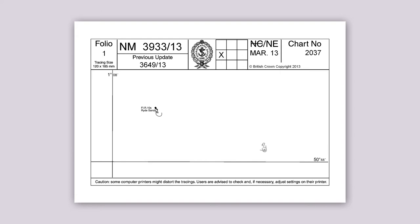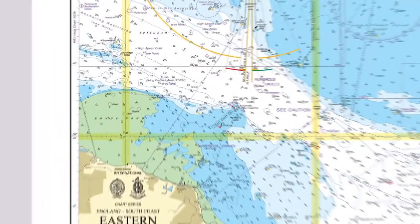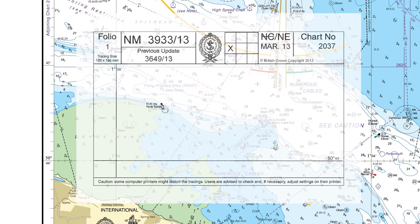This example will demonstrate how to move a light beacon. Start by using the grid box to reference the NM position on the chart. Then, using the latitude and longitude guides on the tracing and the chart, lay the tracing to its exact location.